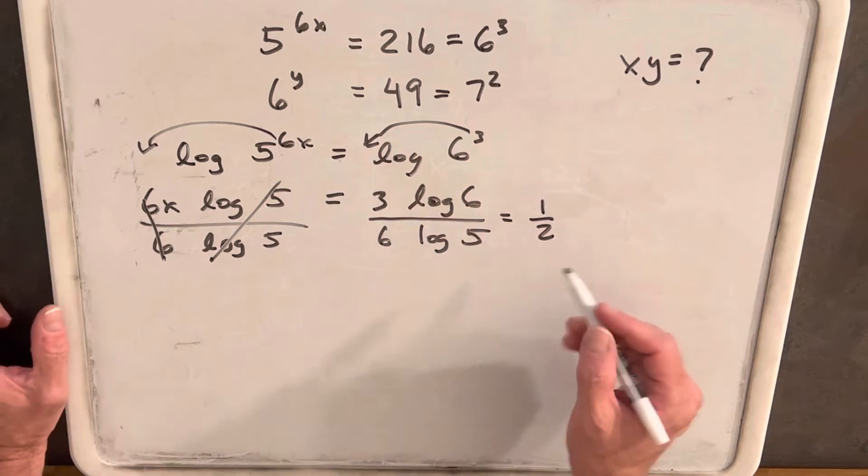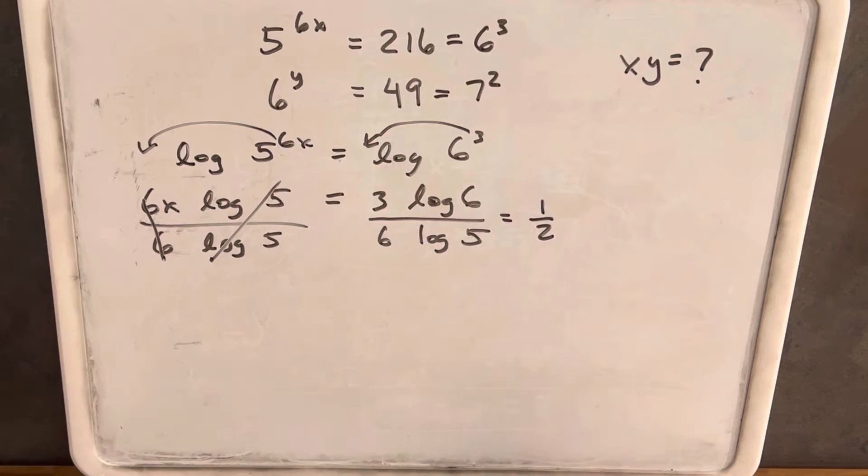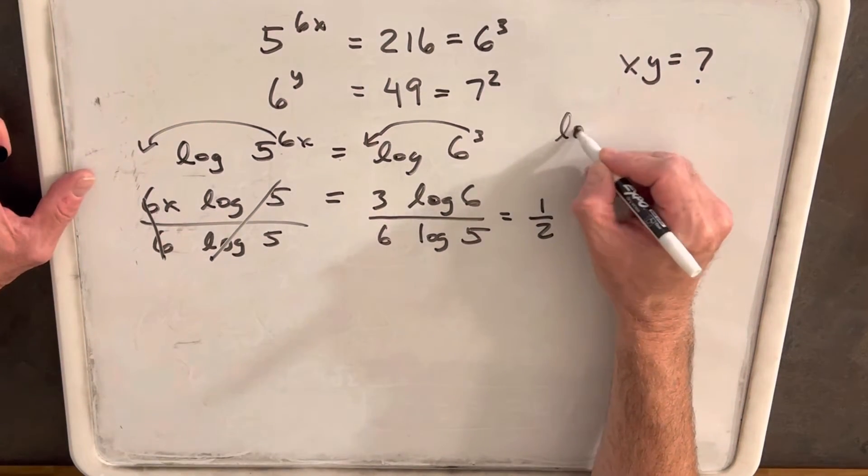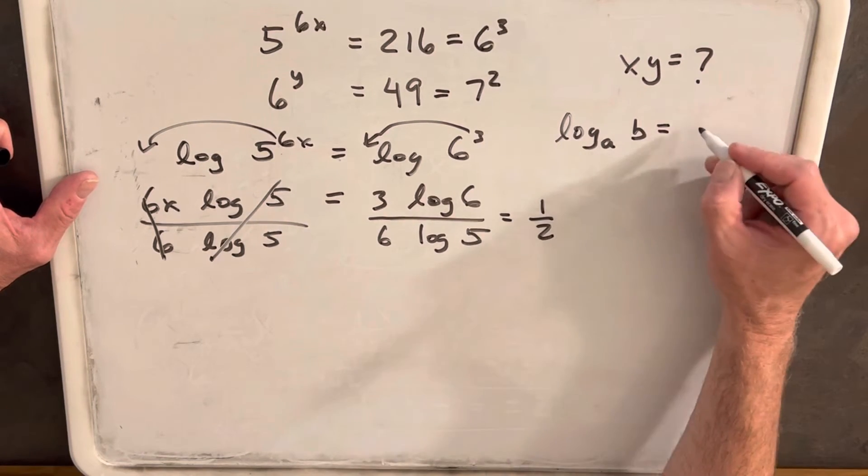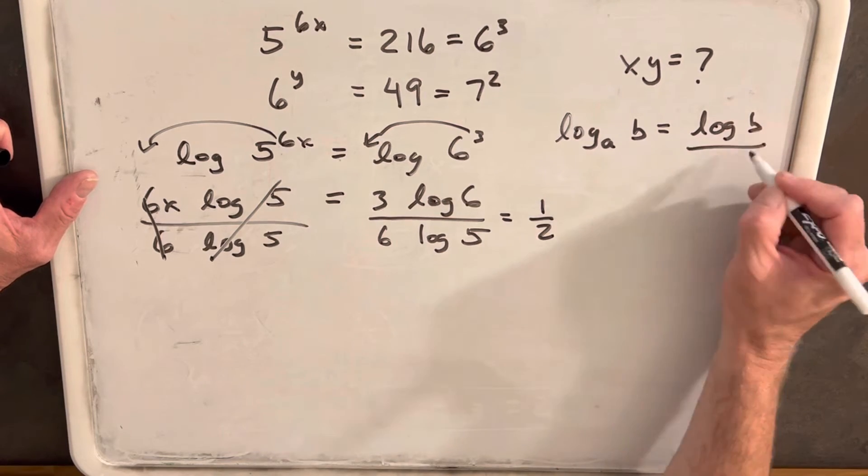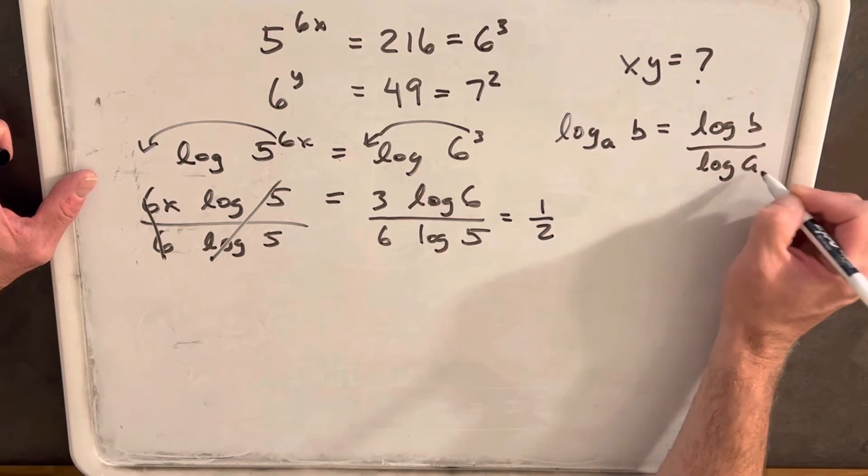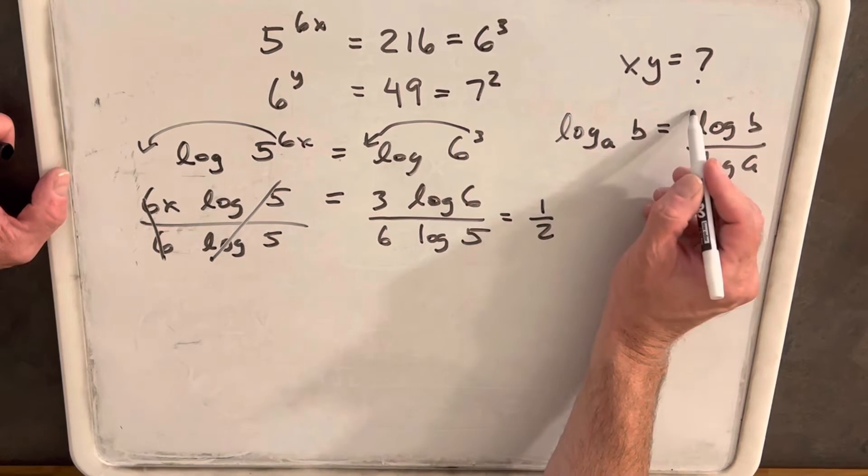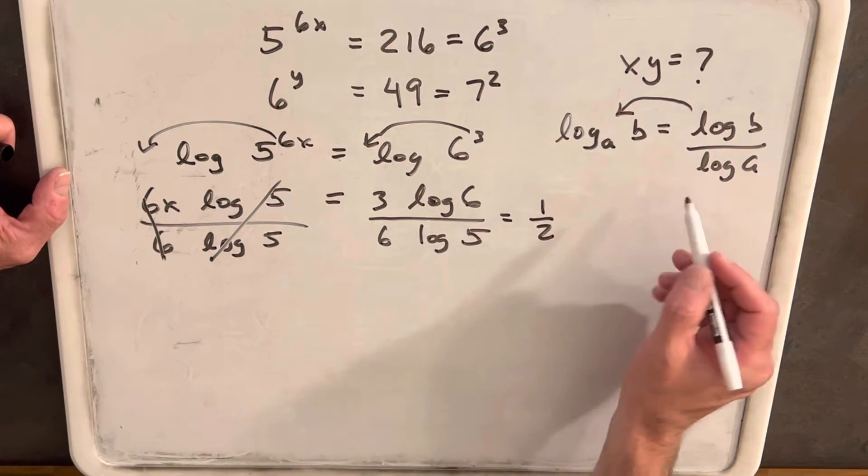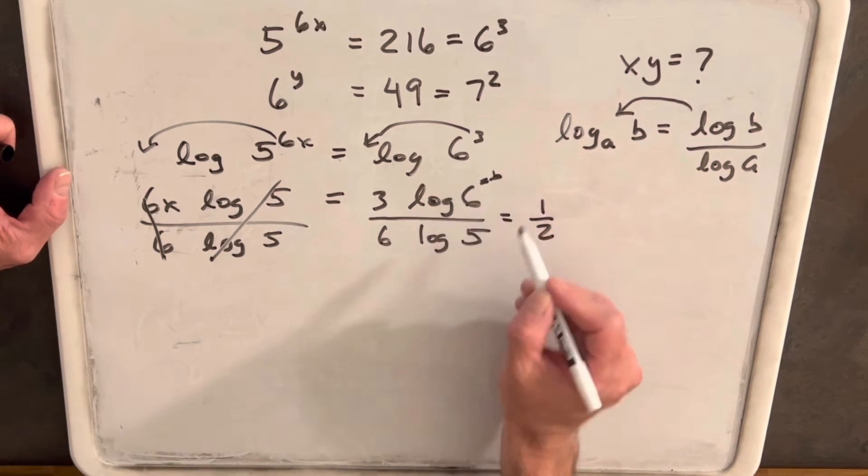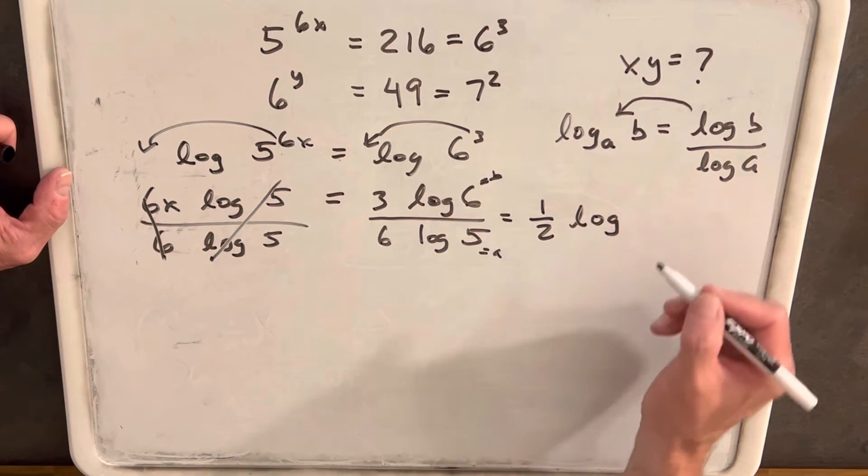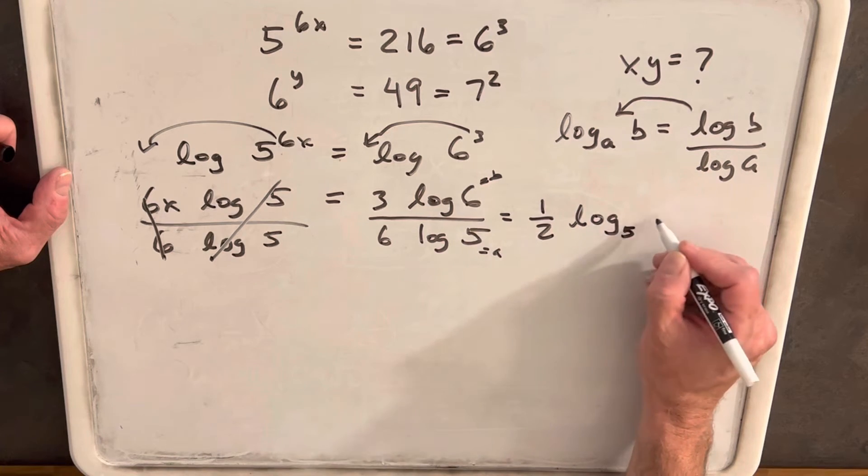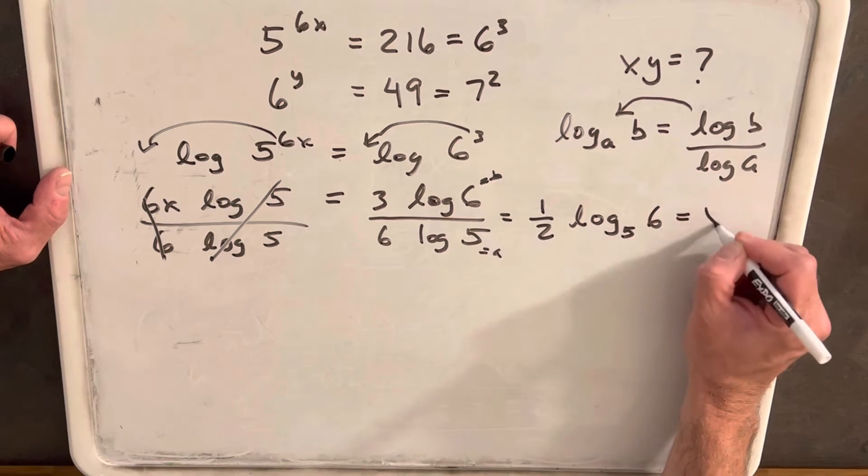And then what I can do with this log 6 over log 5. If you remember the change of base formula, change of base formula just says log of a, b is the same as log b over log a. But then we can do this in reverse, right? And so, like, b is 6 and a is 5. So doing this in reverse, we end up with log base 5, 6 equals x.